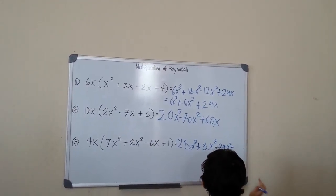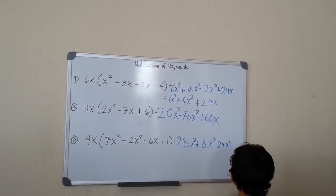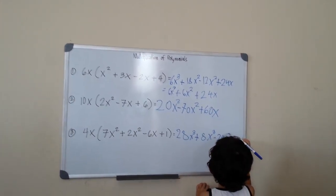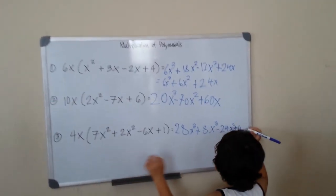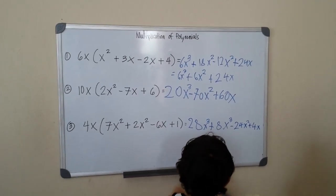x squared. Plus, this one is going to be 4 times 1 equals 4x.